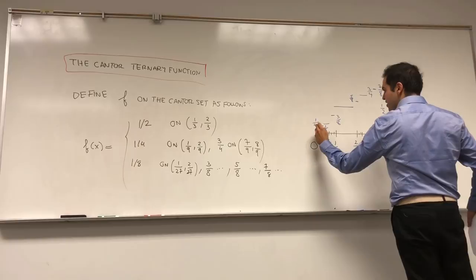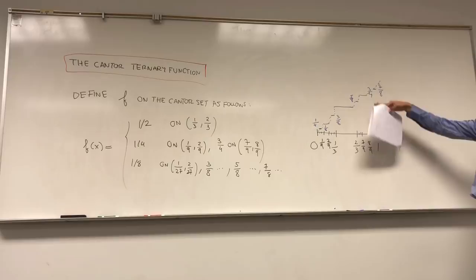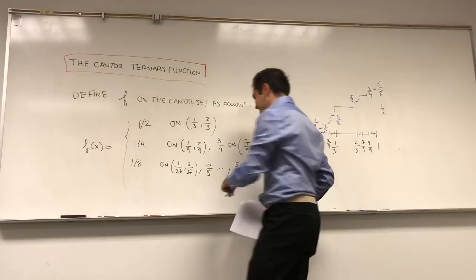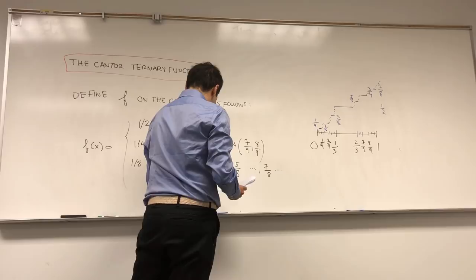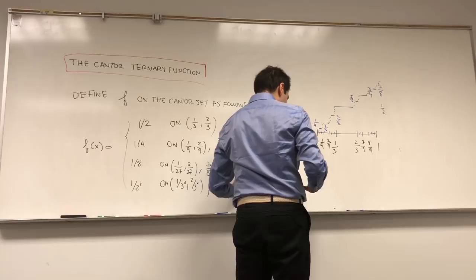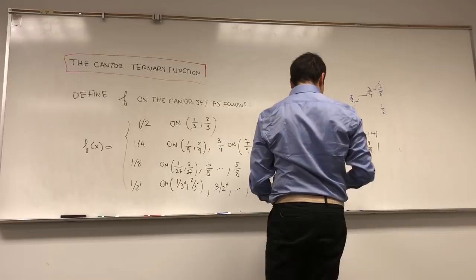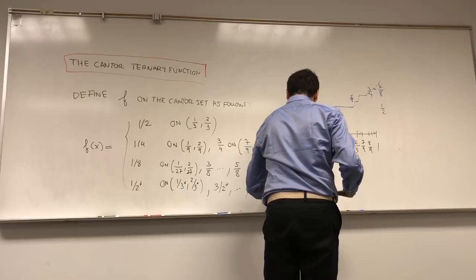If you continue this process, you get this weird thing called the devil's staircase — a function that makes you go up infinitely many steps. In general, on the interval [1/3^n, 2/3^n], the value becomes 1/2^n, then 3/2^n, and so on, up to (2^n − 1)/2^n on the very last piece.